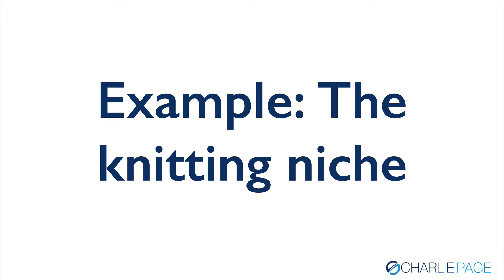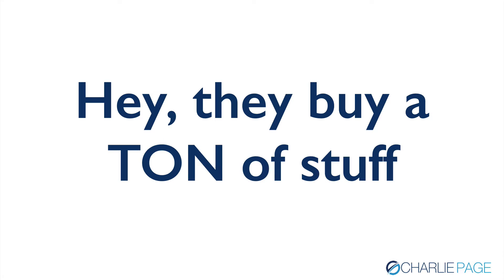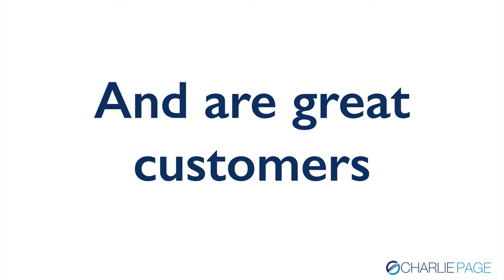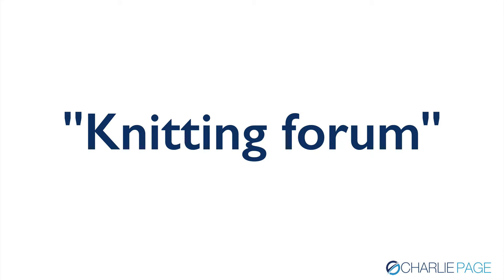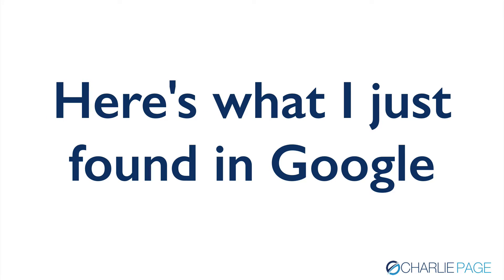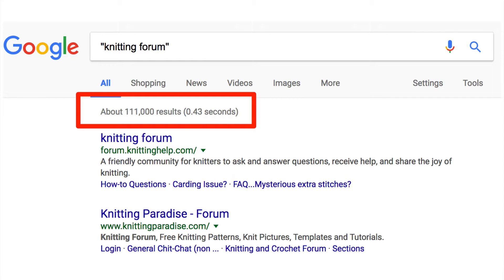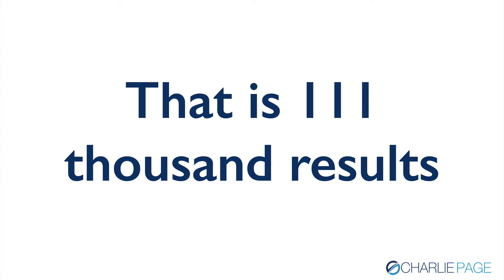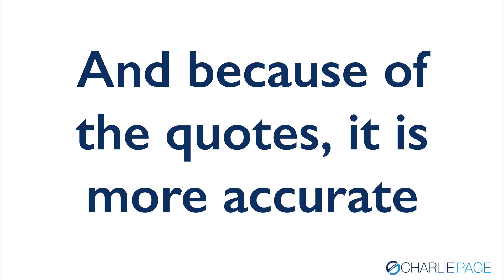Let me give you an example: the knitting niche. I love people who knit — they buy a ton of stuff, and I've worked over the years with people in this niche. They're great customers. So you type this into Google: 'knitting forum' in quotes. Be sure to use the quote marks, because that tells Google to only show you results where both of those words appear next to each other. I just did this today and there are 111,000 results for knitting forums. Because of the quotes, it's much more accurate than searching without them.